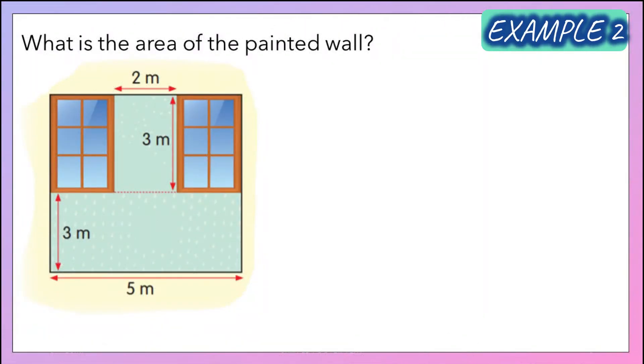Look at this diagram. We have a painted wall. What is the area of the painted wall? We can divide the painted wall into two parts. First part is the upper part of the wall, we'll label the second part as B. So we have two different rectangles here.